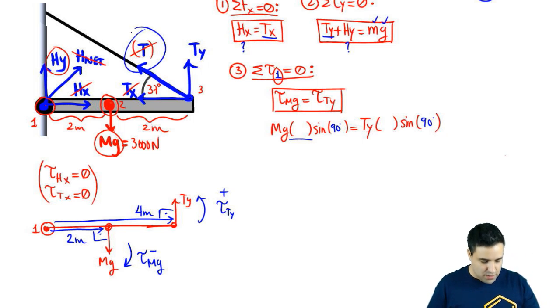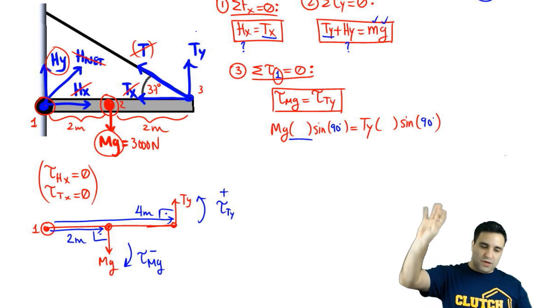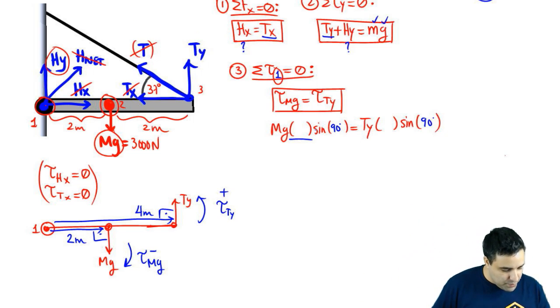That's one of the advantages of doing this in component form, leaving the Tx and Ty, not using T. So both of them are 90, so this is going to be 1 and 1. Now, the distances are Mg, 2, and Ty, 4.